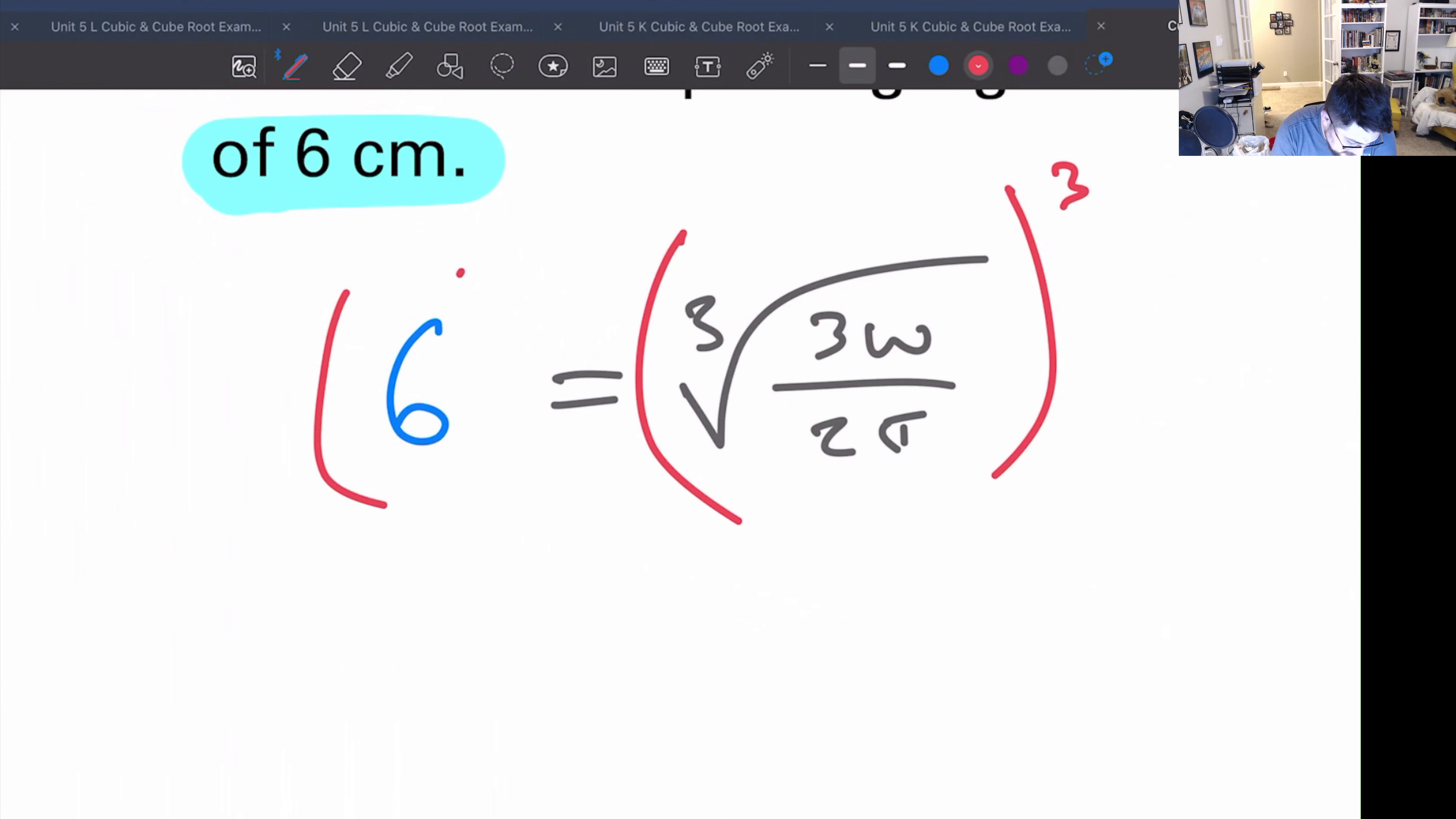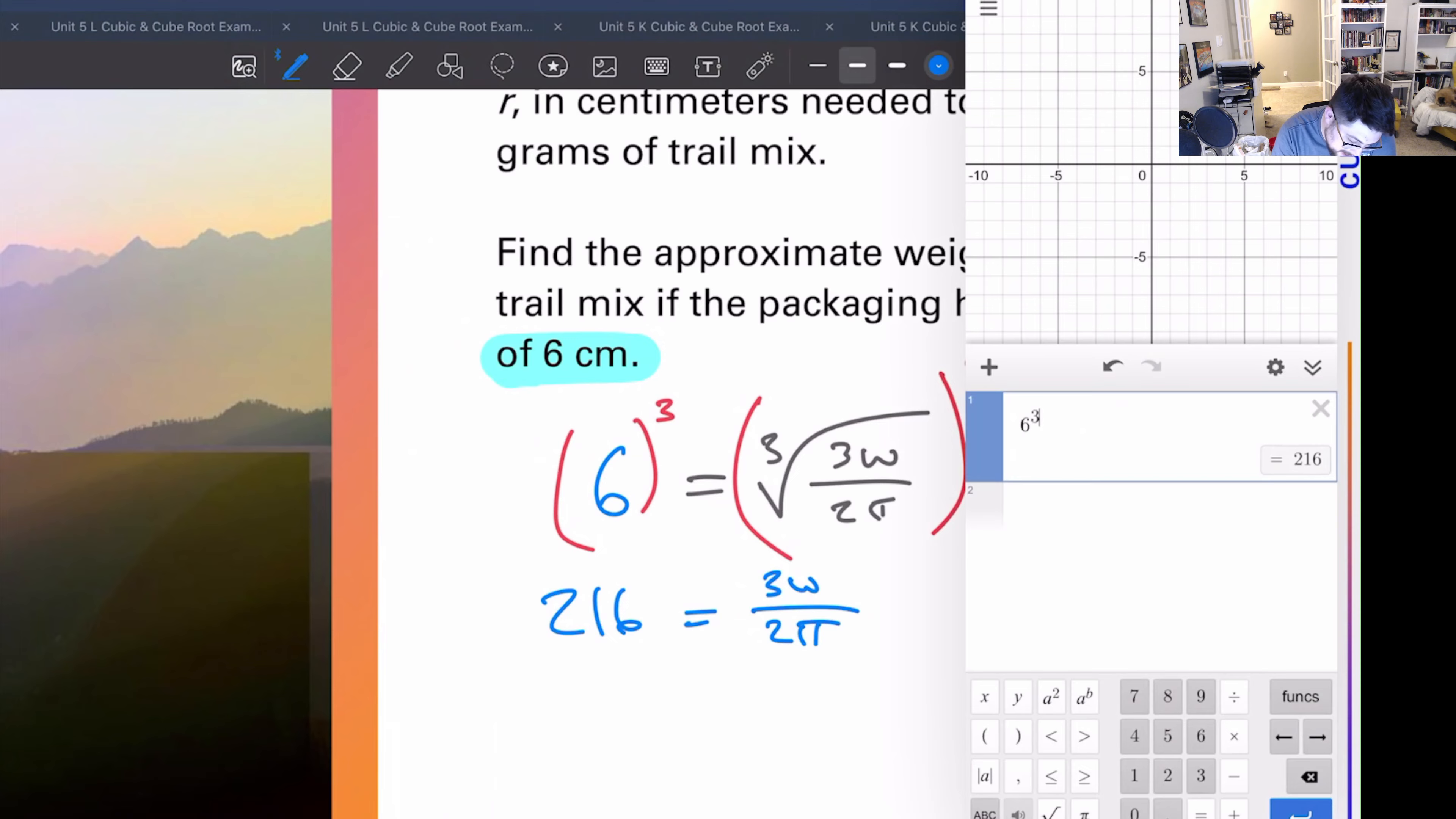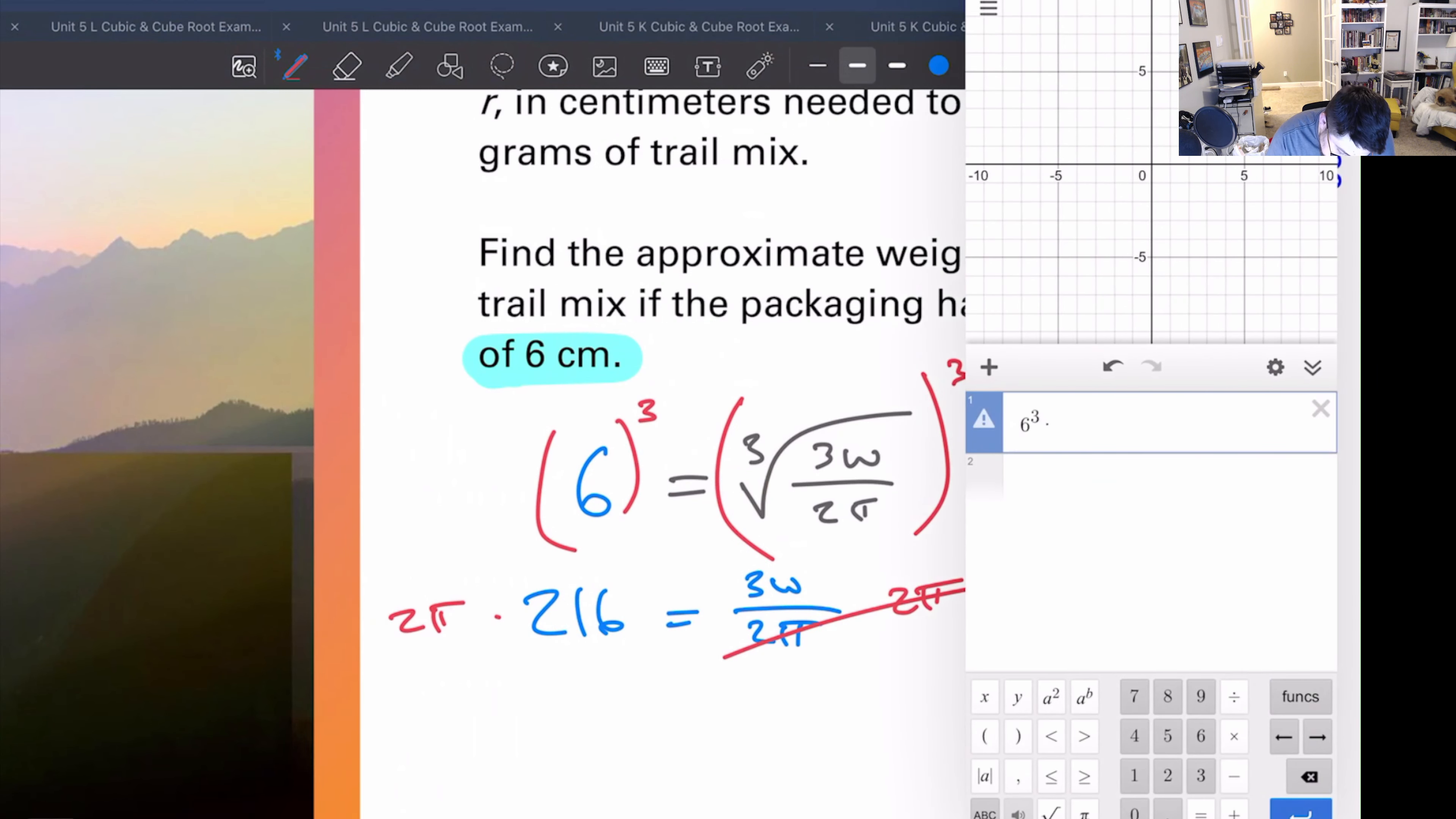Okay, first off, the entire right side is under cube root, we can cube it. So let's cube this thing. So six cubed, grab our thing over here, six to the third power is 216 equals 3w over 2 pi. Now let's get rid of this whole 2 pi on bottom, so let's multiply by 2 pi, cancel those out.